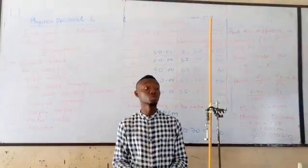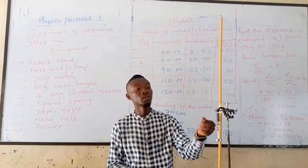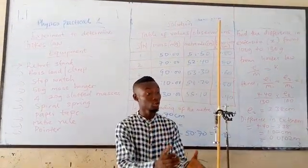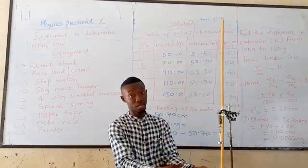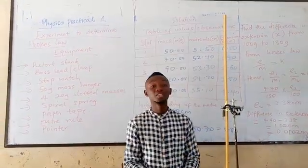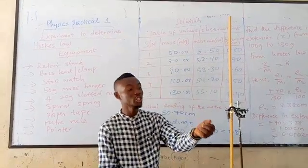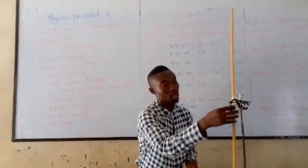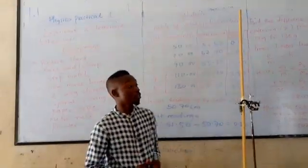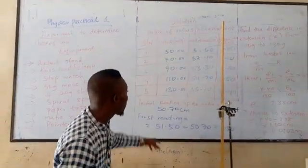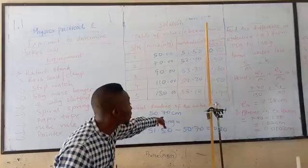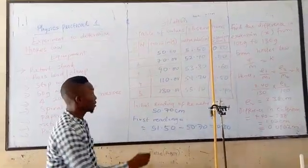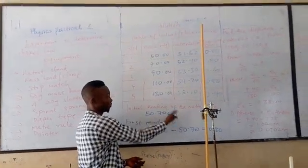So the first thing we will do is we will note the pointer position where there is no mass hanger on the meter rule. So I am going to remove the mass hanger and record the initial position of the pointer. So from here, the initial position of the pointer, as I am reading here, the initial position of the pointer is 50.0 cm. So I will record that, 50.0 cm.